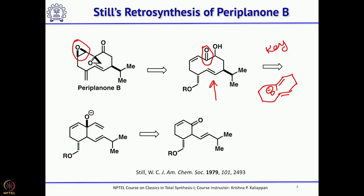As you can see, if you have the beta-gamma unsaturated ketone, simply adding vinyl lithium or vinyl magnesium bromide gives the intermediate or precursor required for the anionic oxy-Cope rearrangement. That precursor can be obtained from cyclohexenone, which is commercially available or well-known in the literature.